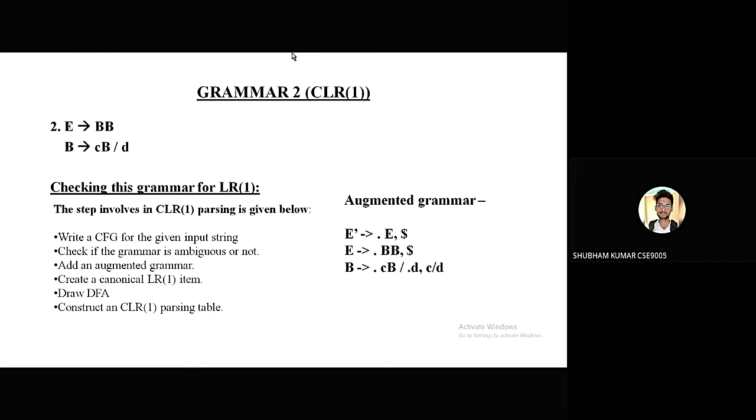For the closure of E, we are writing production of E, which is E tends to dot BB. Now for dot B, we are copying the lookahead from this augment grammar, but we again have B, so we can write the follow of B in the next step. We are writing the follow of B as lookahead, and then we have B tends to dot C B slash dot B comma C slash B. The next step would be to create a canonical LR1 item and draw DFA.